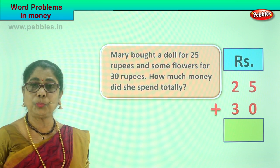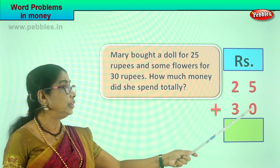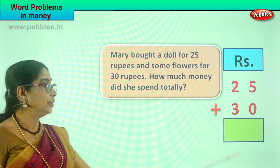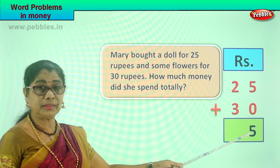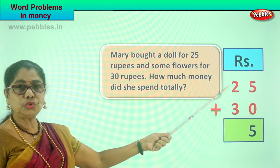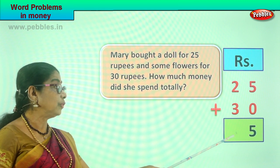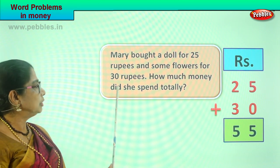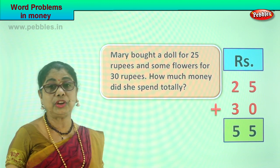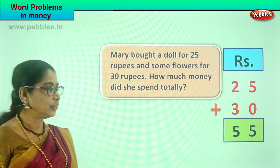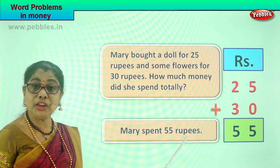Let's go to the ones place: add 5 plus 0. What is 5 plus 0? 5. So we write the 5 here. Now we go to the tens place: 2 tens plus 3 tens — 3 plus 2 or 2 plus 3 is 5, so we write the 5 here. How much money did Mary spend totally? Mary spent totally 55 rupees to buy a doll and some flowers.